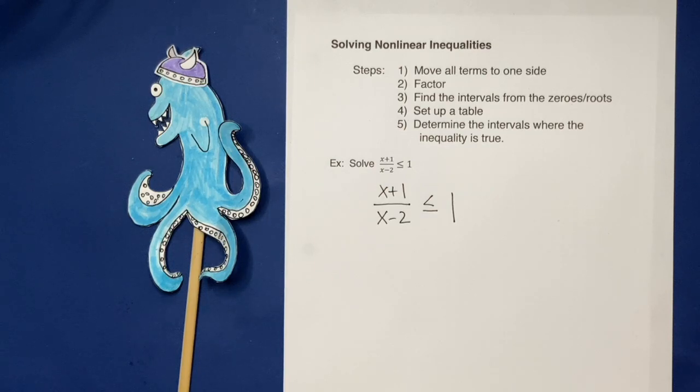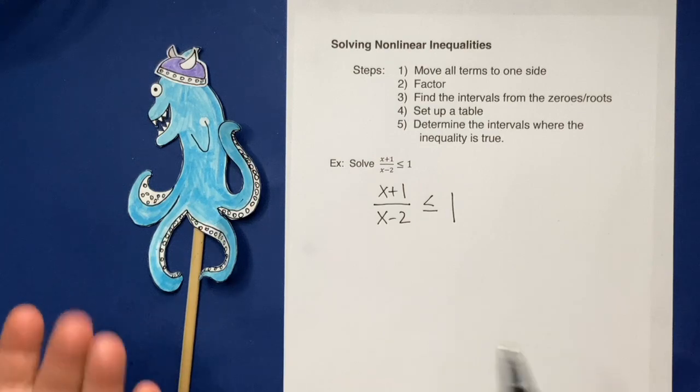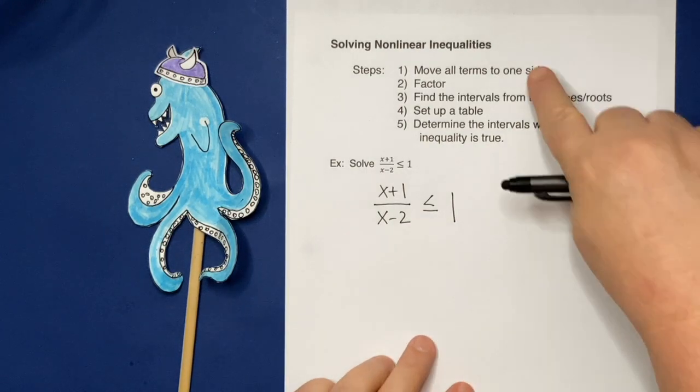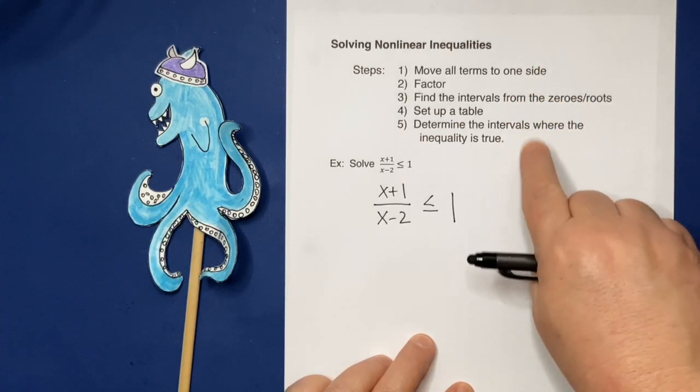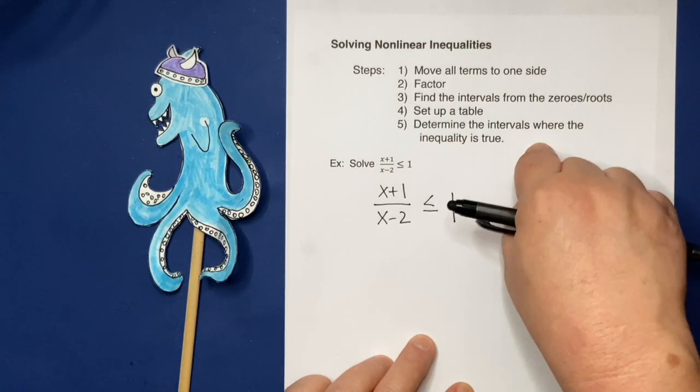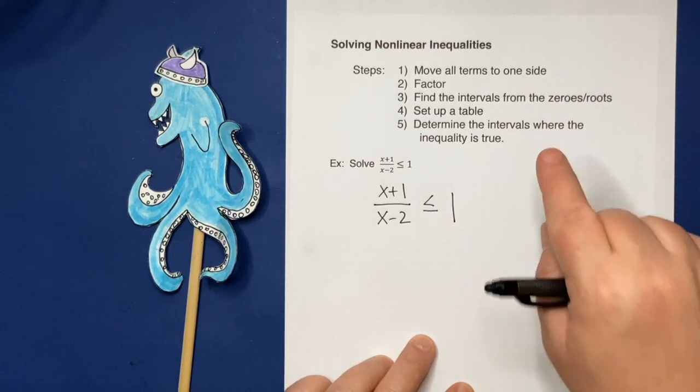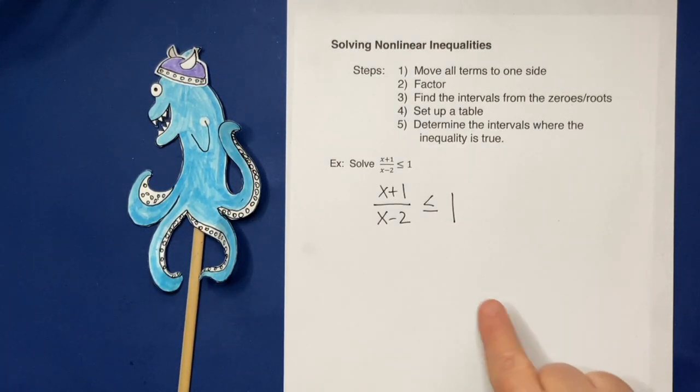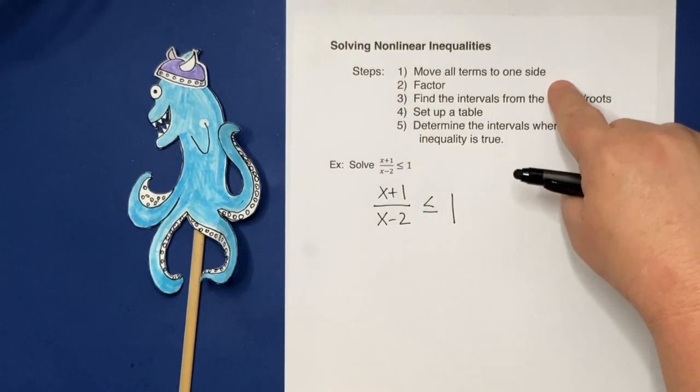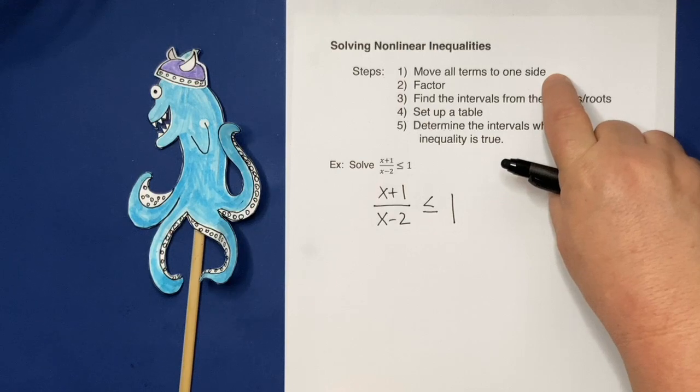Because anything we're going to do, if we multiply on both sides or divide on both sides, and we multiply or divide by a negative accidentally, we would have to flip the inequality. But when we're working with x, we might not know we've done that. So this is going to be the recommendation for solving. It is a little more complicated than when we've got a linear inequality, but this will ensure that you won't accidentally mess up where the inequality sign should face. So first step, actually a lot like quadratics, move all terms to one side.